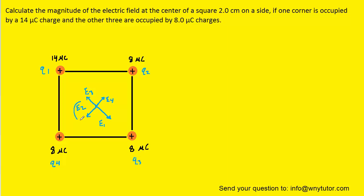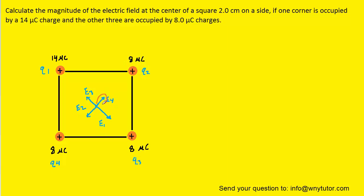It's important to note that E2 and E4 will actually cancel each other out. The reason is that charge Q2 and charge Q4 both have 8 microcoulombs of charge, and the distance from each charge to the center of the square is exactly the same due to the symmetry of the square. Since Q2 and Q4 have the same charge and are the same distance from the center, their electric field magnitudes are exactly equal but their directions perfectly oppose one another — so they cancel out. We can simplify the problem by removing E2 and E4.